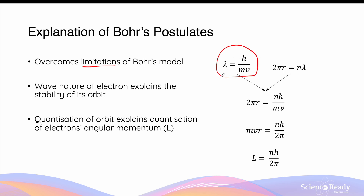If we combine de Broglie's equation with the quantization of the circumference of the orbits — substituting lambda from the two equations — we get 2πr equals nh over mv. When we multiply mv on both sides and divide by 2π on both sides, we get mvr equals nh over 2π. We know that mv is the momentum of a particle, and mvr is the expression for the angular momentum of the electron, also written as L. So the angular momentum equals n — an integer (1, 2, 3, ...) — times h divided by 2π. This expression shows that the angular momentum of the electron is a multiple of Planck's constant divided by 2π, supporting Bohr's third postulate.